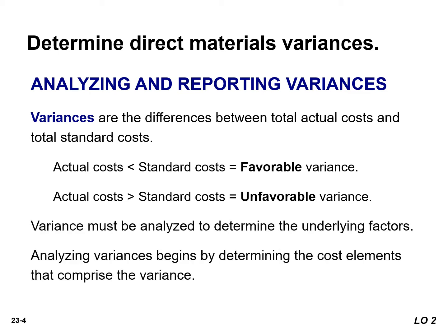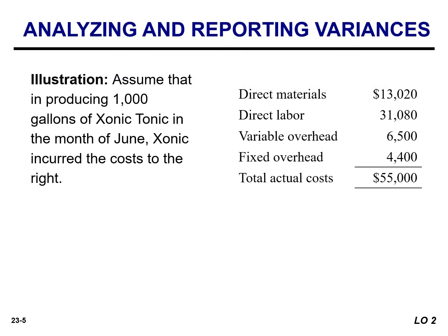A variance must be analyzed to determine the underlying factors. Analyzing variances begins by determining the cost elements that comprise the variance. Let's assume they produced 1,000 gallons in the month of June and incurred $55,000 in manufacturing cost.